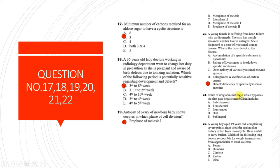Question 21: The route of administration that bypasses first-pass hepatic metabolism. The correct option is intravenous, because intravenous injection directly delivers the drug into systemic circulation, unlike transdermal, subcutaneous, or oral routes where the drug passes through hepatocytes in the liver and undergoes metabolism.